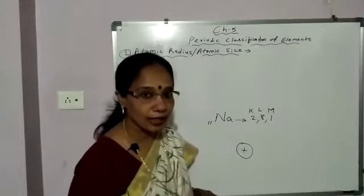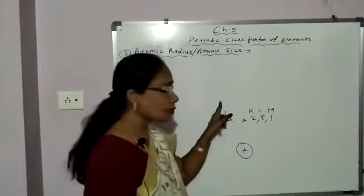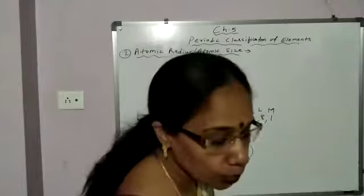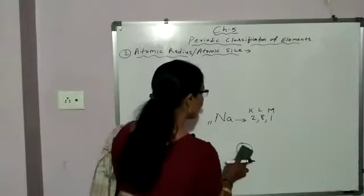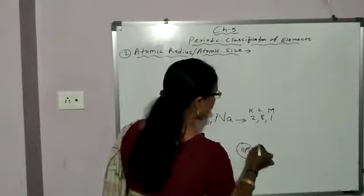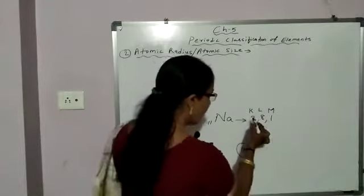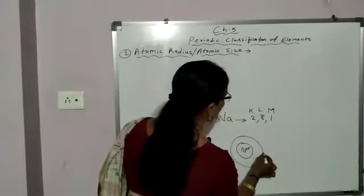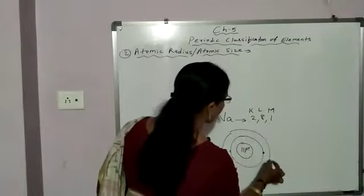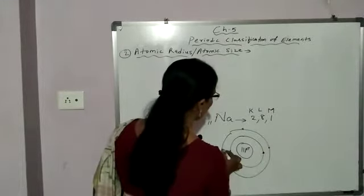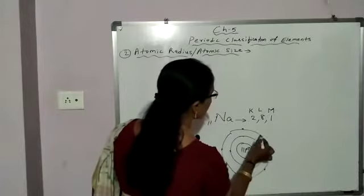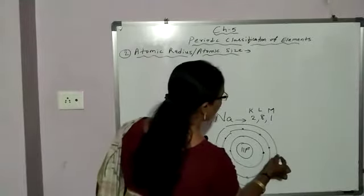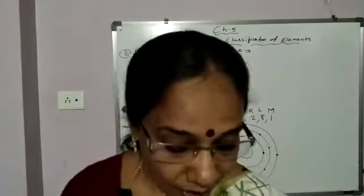Protons are present inside the nucleus. Atomic number 11 means there are 11 protons in the nucleus. Electrons are filled in 3 shells: first shell has 2 electrons, second shell has 8 electrons, and the third shell has 1 electron.